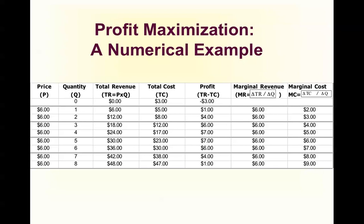The firm is earning one more dollar relative to the cost. So should the firm produce one more? The answer is absolutely yes — the firm can get away with producing one more. So really the firm should produce 5. They'll make another $7, and at this point marginal revenue is equal to marginal cost. So the firm produces at a quantity of 5, where MR equals MC.